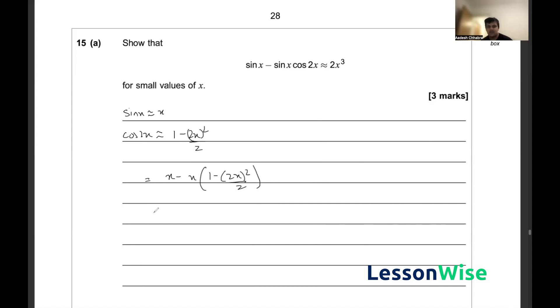If I expand this, this becomes x minus x plus 4x squared times x upon 2. This falls down to x minus x is 0 and 4x squared times x is 4x cubed divided by 2, which is just 2x cubed.